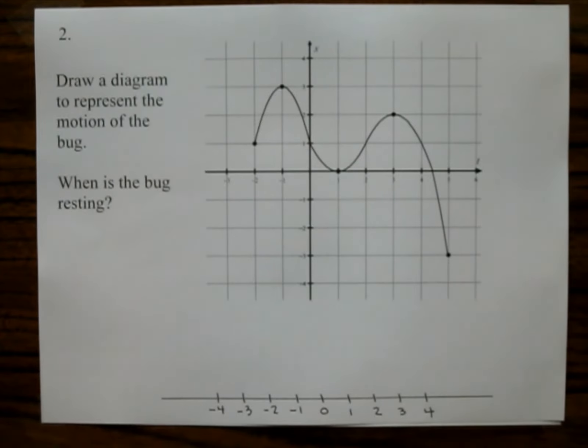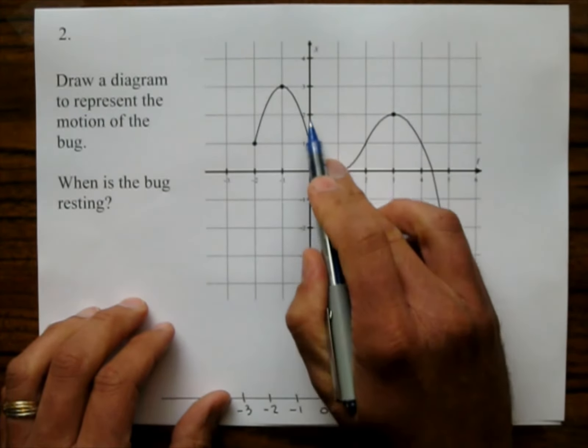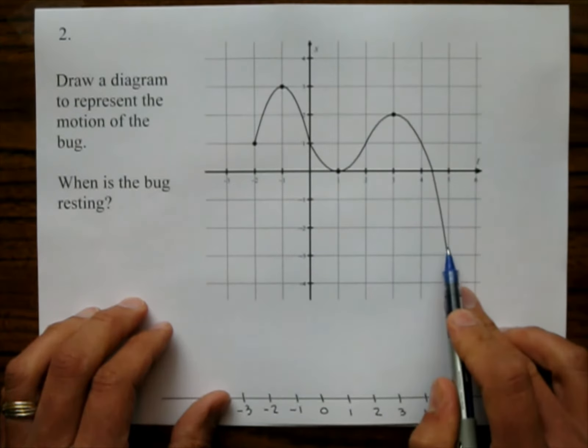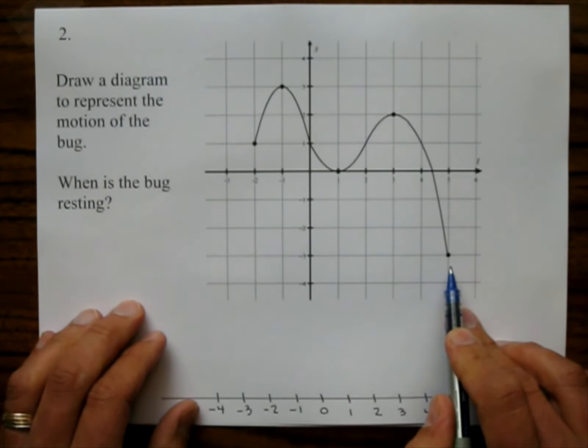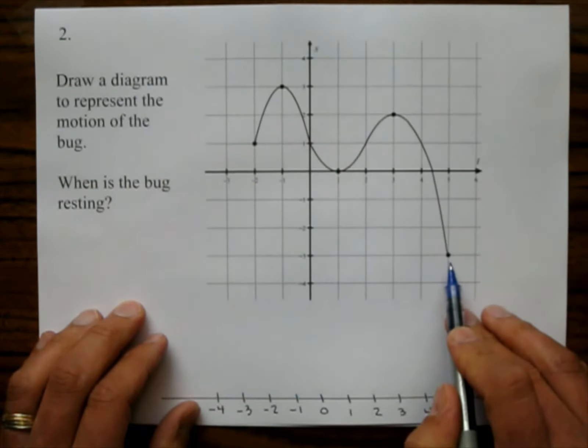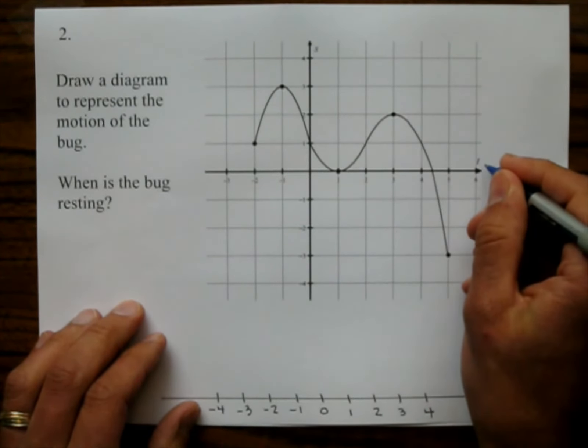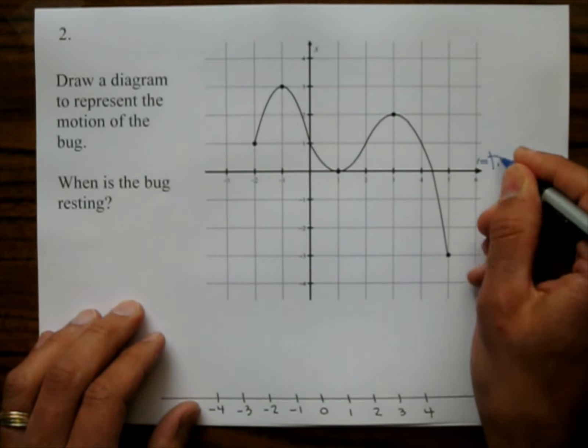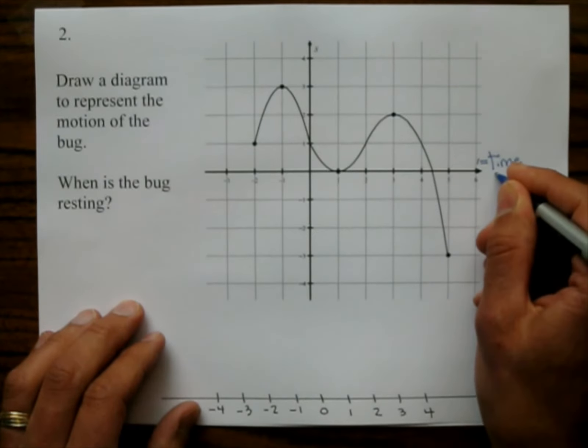Well now look what we have here. We have a function. Now remember a function, every input has one output, and the picture of the function, it passes the vertical line test. The input of the function is on the x-axis, and in this case it is time. So this is time right here, which is seconds.